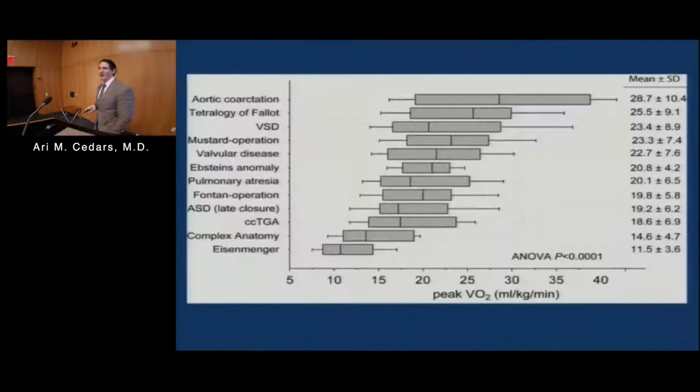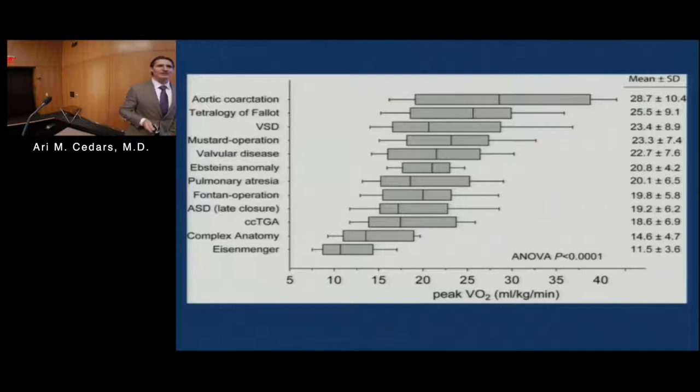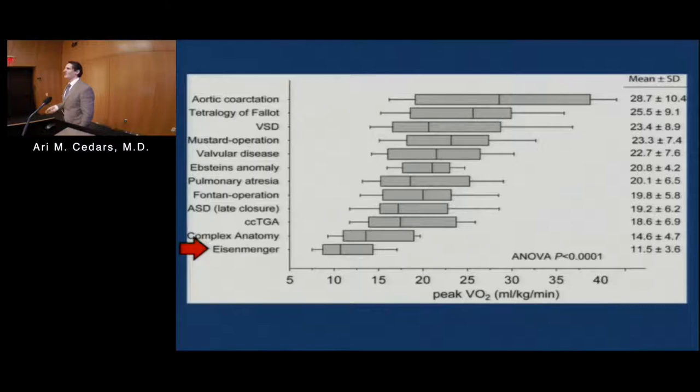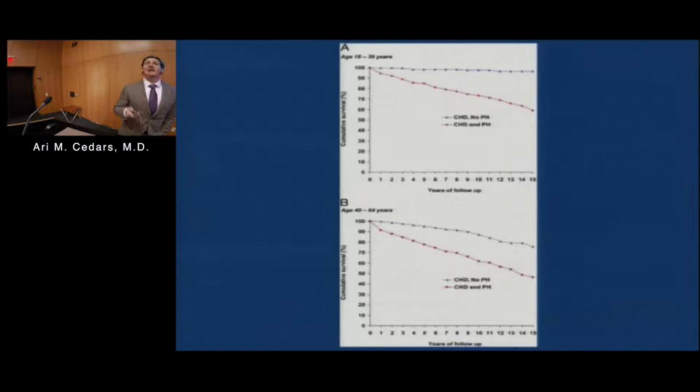Those friends of yours who've got it — it cramps their style. Looking at a study from the Great Ormond Street Hospital in London, they examined the exercise capacity of people with varying congenital heart disease lesions, age-matched. The group who had the worst exercise tolerance were those with Eisenmenger syndrome, which is essentially advanced pulmonary hypertension associated with congenital heart disease. Those friends with pulmonary hypertension — it's not only that they can't run a marathon; there are other issues.